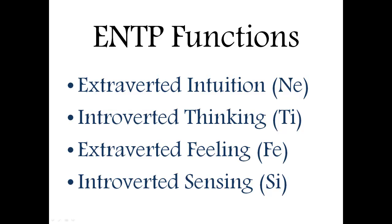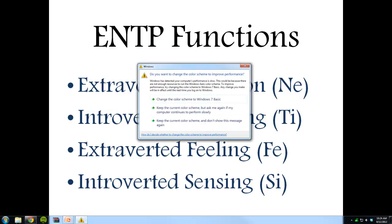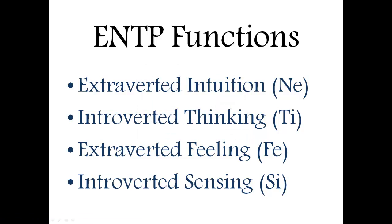Their third function is extroverted feeling, or FE. This is developed a bit later in the ENTP's life and deals with emotions, empathy, and understanding other people. As they get older, they become better at understanding others' emotions, which can go a long way in developing a charismatic personality and knowing the right things to say to get the reaction they want out of people.